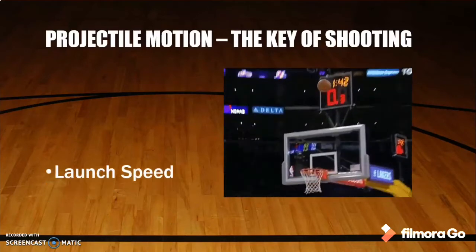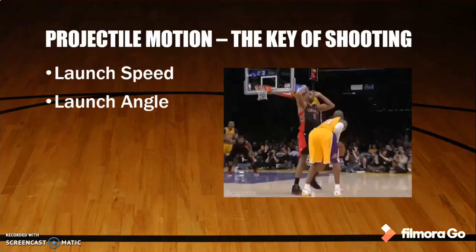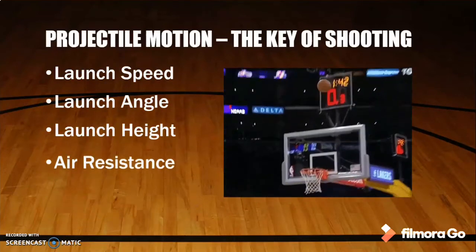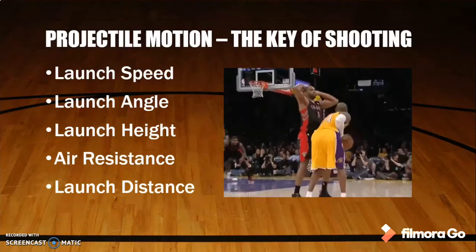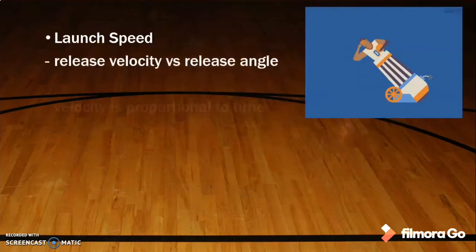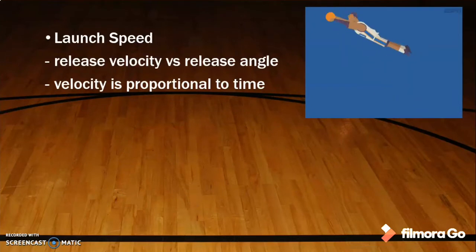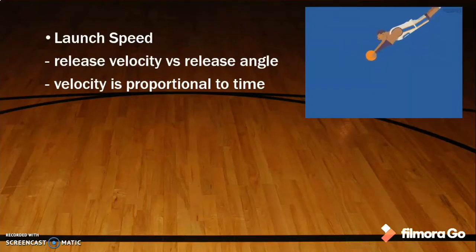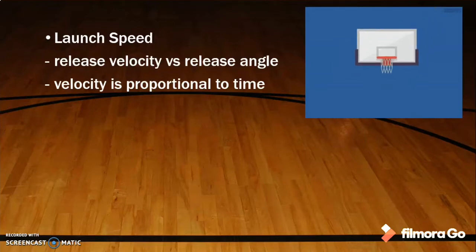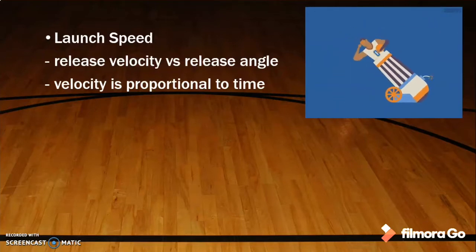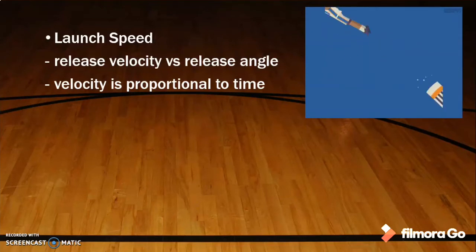The five keys are launch speed, launch angle, launch height, air resistance, and launch distance. First, launch speed. It is important to shoot the ball in as small a time frame as possible to result in a greater release speed, since velocity is proportional to time. Release speed is proportional to the force applied to the ball — the more force applied, the further the ball will travel.